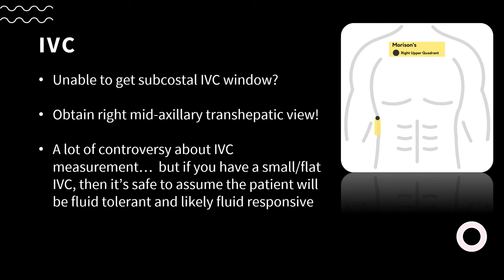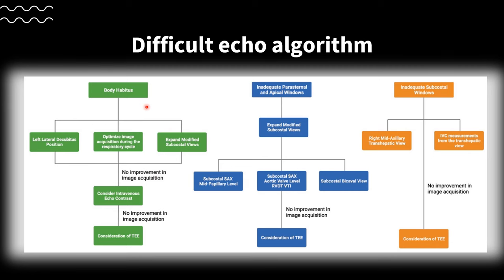The authors note that you should get a coronal view of the IVC; however, I suggest using a transverse plane just below the hepatic vein entry to the IVC, which removes the problem of the IVC being elliptical. To summarize: if you have a patient with large body habitus and poor windows, roll them into the left lateral decubitus or glamour pose, optimize image acquisition during the respiratory cycle by having them hold their breath in inhalation or exhalation, then move on to modified subcostal views including the mid-papillary short axis, the short axis aortic valve view where you measure RVOT VTI, measure their CTAC, and if all that doesn't work, measure the IVC in the right mid-axillary transhepatic view.